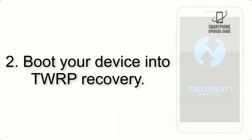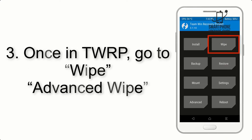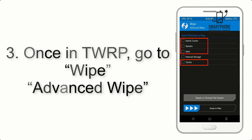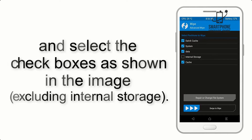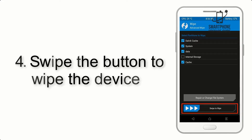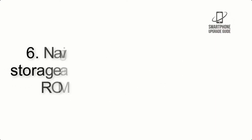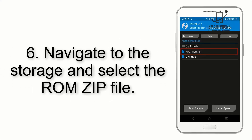Step 2: Boot your device into TWRP recovery. Once in TWRP, click on Wipe, then Advanced Wipe, and select the checkboxes as shown in the image, excluding internal storage. Step 4: Swipe the button to wipe the device. Step 5: Go back to the recovery main screen and tap on the Install button.